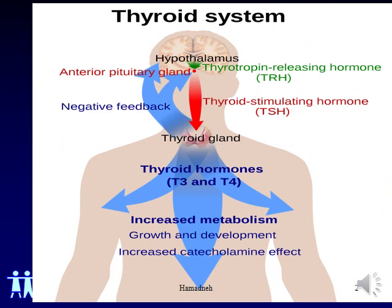The hormonal output from the thyroid is regulated by thyroid stimulating hormone, TSH, which is produced by the anterior pituitary, which itself is regulated by thyrotropin releasing hormone, TRH, that is produced by the hypothalamus.